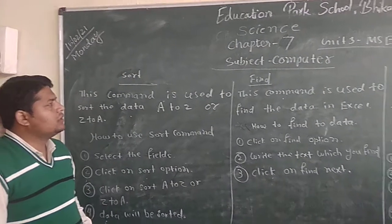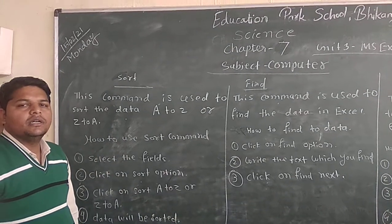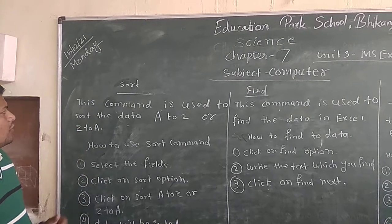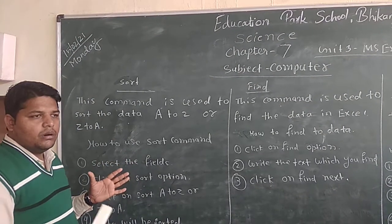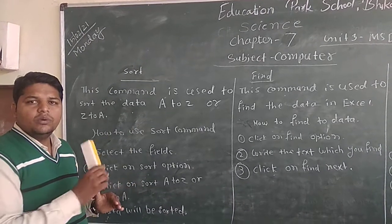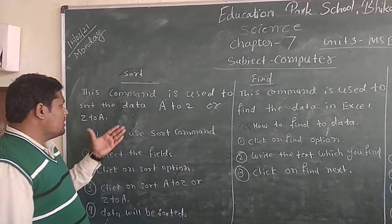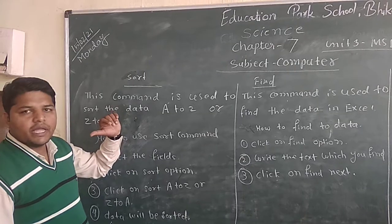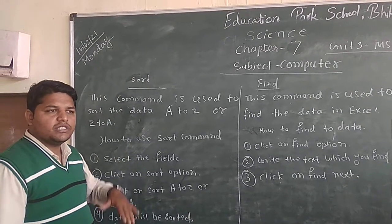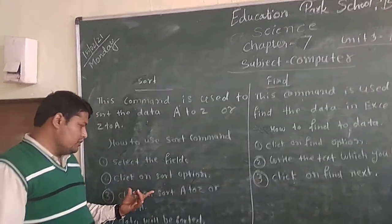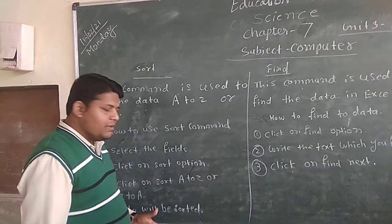Hello everyone, today I will explain some commands in MS Excel. The first one is the sort command. This command is used to sort the data in your Excel sheet, A to Z or Z to A. To use it, first select the column, then click on the sort option, then click on sort A to Z, and the data will be sorted.